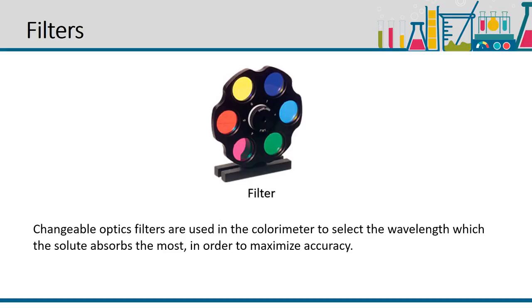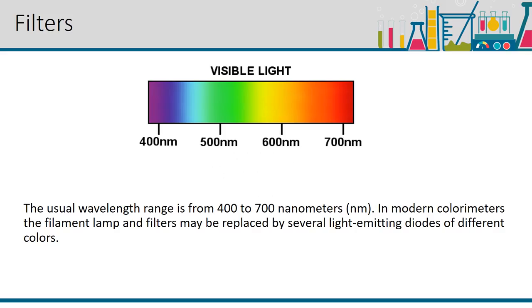Changeable optics filters are used in the colorimeter to select the wavelength which the solute absorbs the most in order to maximize accuracy. The usual wavelength ranges from 400 to 700 nanometers. In modern colorimeters, the filament lamp and filters may be replaced by several light emitting diodes of different colors.